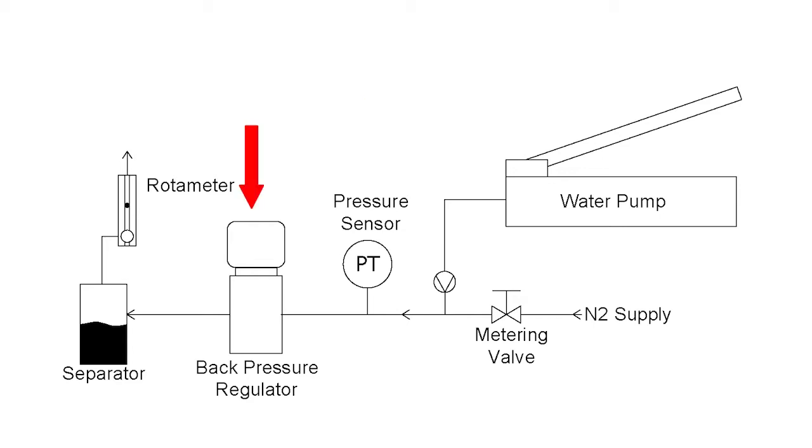Next we have our spring-loaded back pressure regulator which I've set to about a thousand psi and finally we collect the fluid through a separator and measure its volumetric flow with a rotameter.